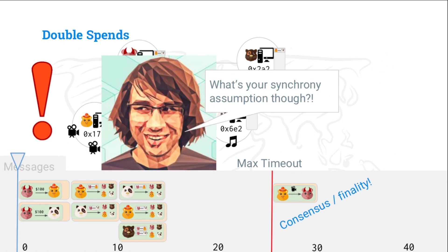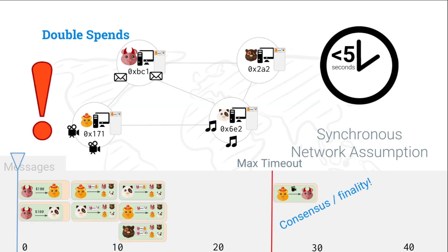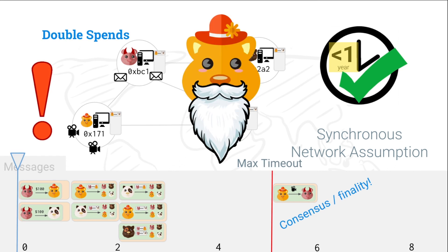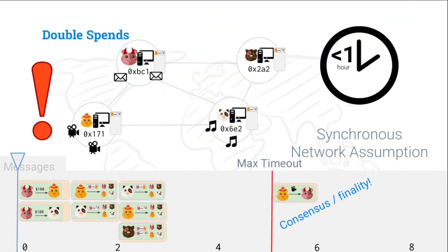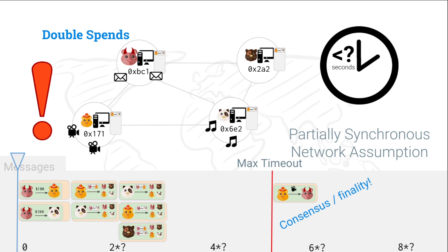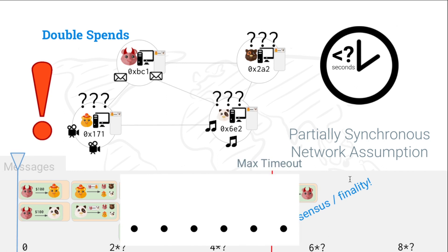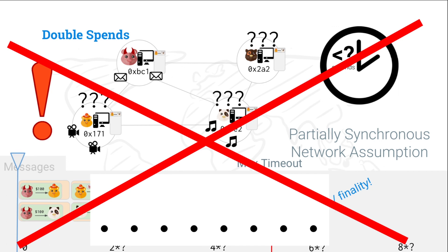Vlad comes over and asks: what's your synchrony assumption? It turns out our synchrony assumption is pretty strong. We're assuming five seconds to propagate messages — that's a really short, strong guarantee. What if it's more realistic to say network messages propagate within an hour? Or a day? Or a year? We don't really know how long these messages are going to propagate. So if we use a partially synchronous network model where we don't know how long messages propagate, we have to change our bounds to 2*delta where delta is unknown. None of the nodes can calculate the max timeout, so they just wait and wait — and that breaks. This consensus protocol only works within a synchronous network.